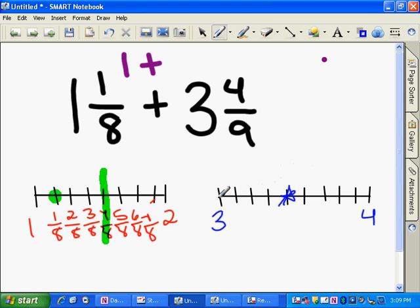We can say, okay, 1, 2, 3, 4, or 1, 2, 3, 4, 5. So it's actually closer to the 3. So that means 3 and 4 ninths rounds to 3.